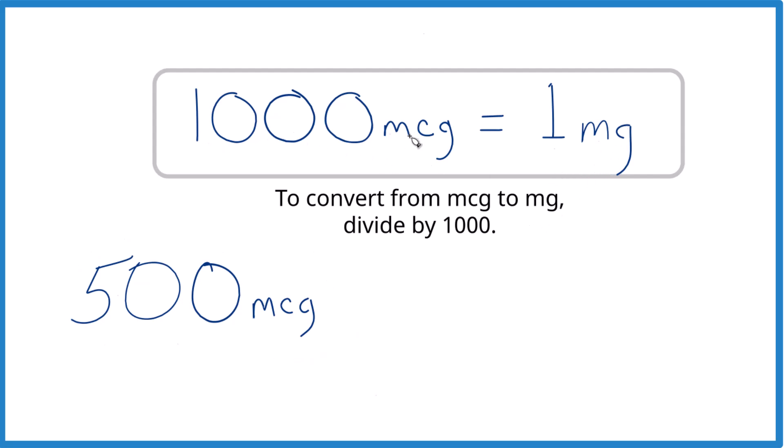There are 1,000 micrograms in one milligram. That's our conversion factor. So MCG to MG, we just divide by 1,000.